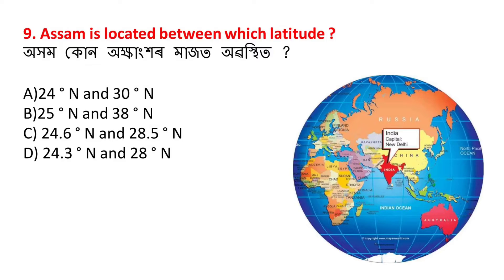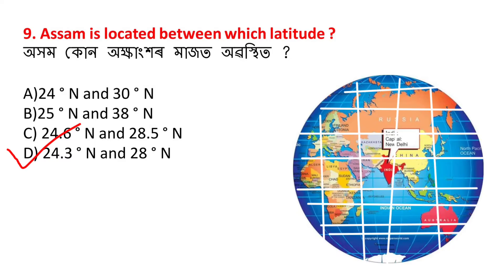Oham kun oikkhahar mazat aubo sthito? The answer is D. Assam is located between latitudes - aadhaan hapoli and thiyo hoi thoka kari. And longitudinally, Assam extends from 89.45 degrees east longitude to 96 degrees east longitude.